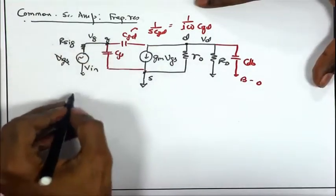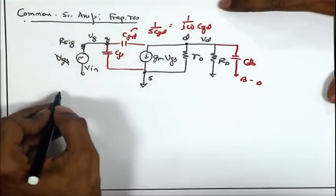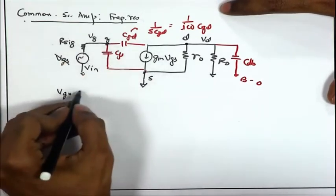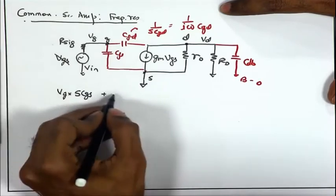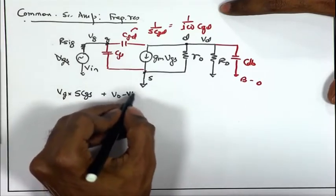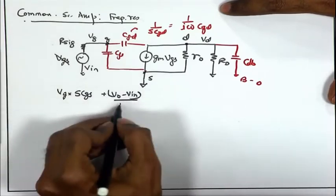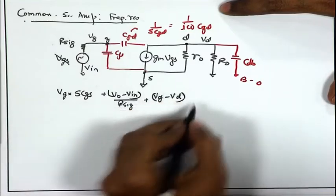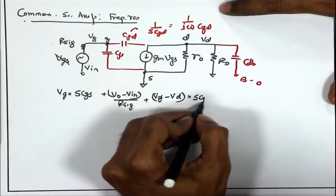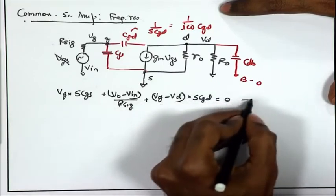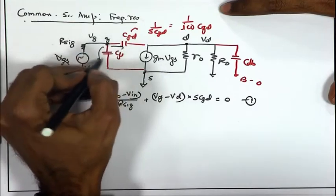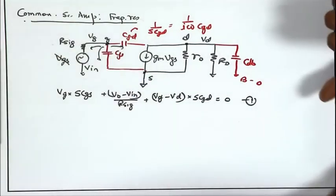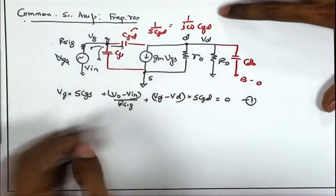At the gate node, the KCL expression gives: VG·(sCGS) + (VG − V_in)/R_signal + (VG − VD)·(sCGD) = 0. This is the sum of currents leaving the gate node through those three branches set equal to zero. Likewise, we can write down the equation at the drain node.